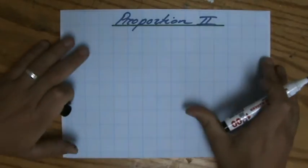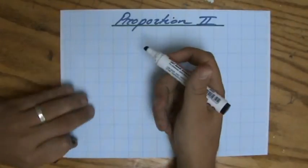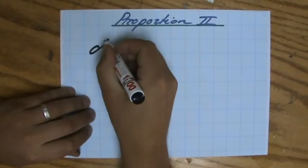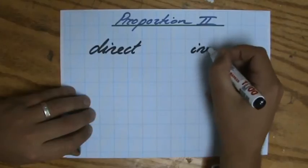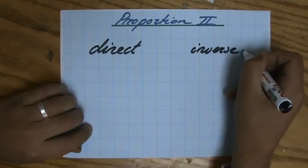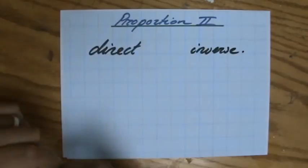So in the previous video, when we started to talk about proportion, I said that you have to distinguish for each question between direct proportion and inverse. You have to determine is this an example of direct proportion or inverse proportion.